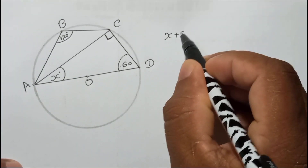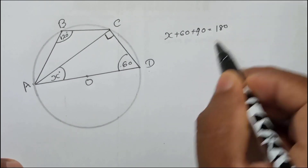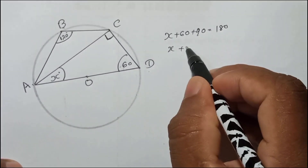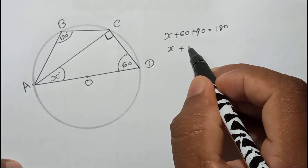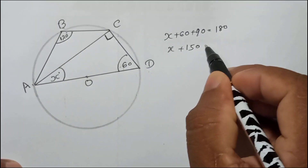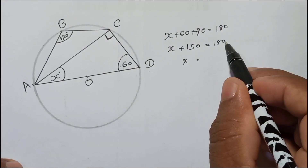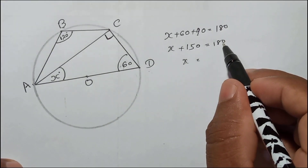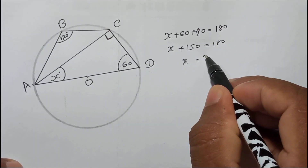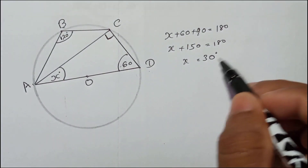Now you can get x. We write x plus 60 plus 90 equals 180. So 90 plus 60 equals 150, and 180 minus 150 equals 30 degrees. That's the answer for x — x equals 30 degrees.